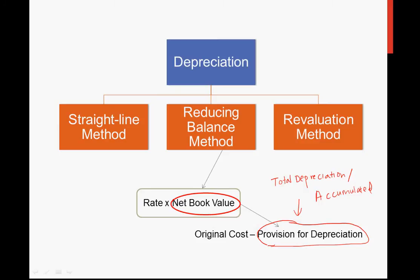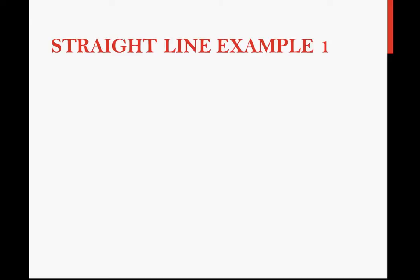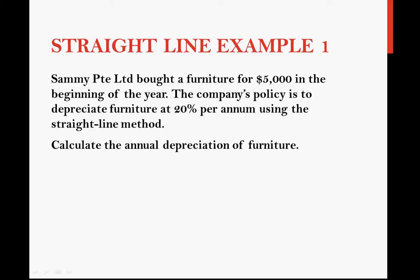Now let me show you by example so you can understand the formulas better. Let us apply the first straight-line formula to example 1. The question says Semi-Private Limited bought furniture for $5,000 at the beginning of the year. The company's policy is to depreciate furniture at 20% per annum using the straight-line method. The question tells you which method to use and gives you the cost of $5,000 and the rate of 20%.